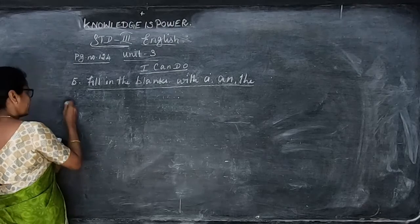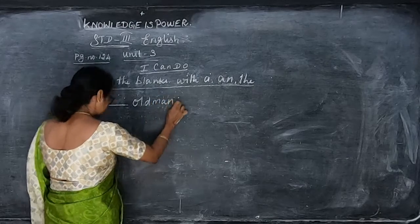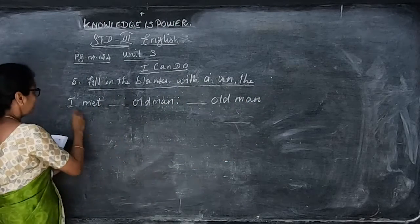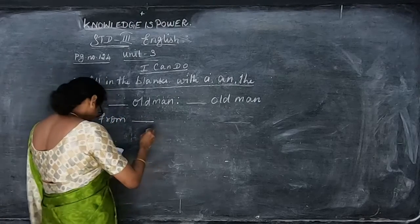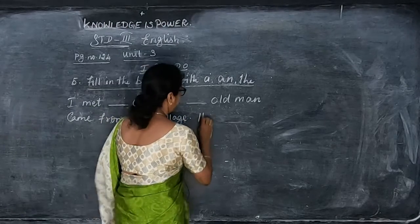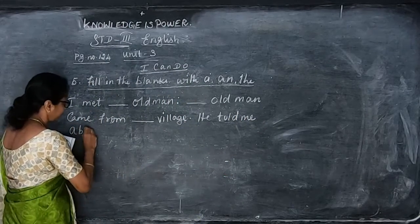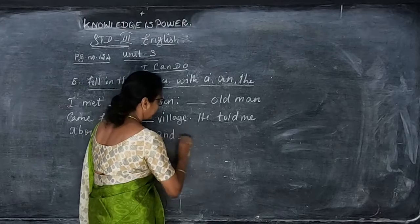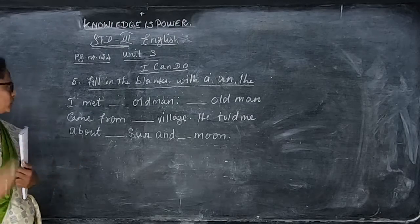The first one: 'I met dash old man. The dash old man came from dash village. He told me about dash sun and dash moon.' So you have to write a, an, or the in the blanks. Shall we start? 'I met dash old man' — the old man is a noun, and 'old' starts with O — a vowel.